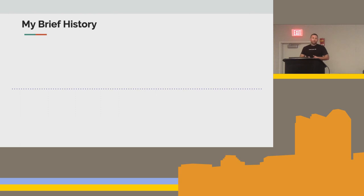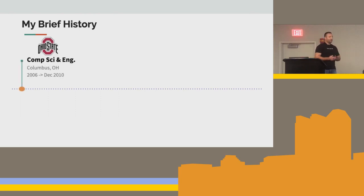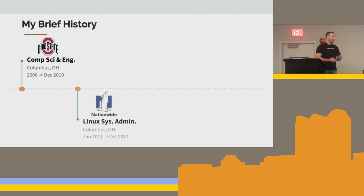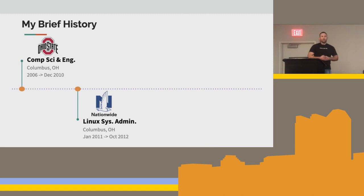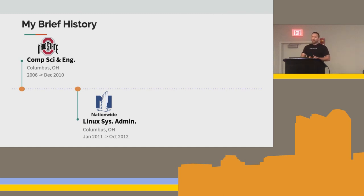Just a quick introduction about myself: I started at Ohio State in 2006 as an undergraduate in computer science and engineering. I wasn't a very good student — had a very average GPA, and I probably wouldn't get into the engineering program today with that GPA. But I spent a lot of time in classes doing the work, and it wasn't until I found Python that I got really excited about computer science and building things.